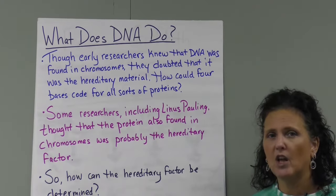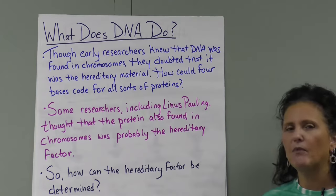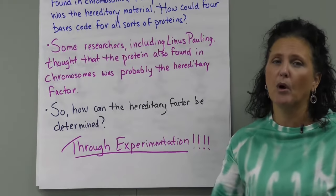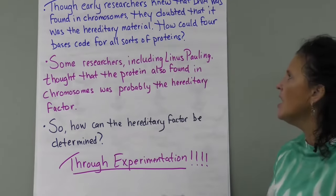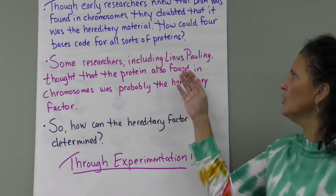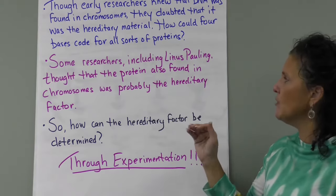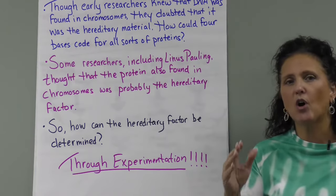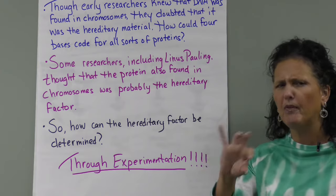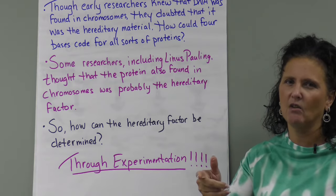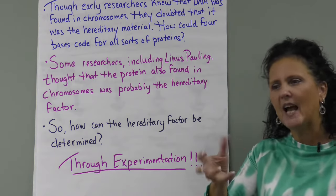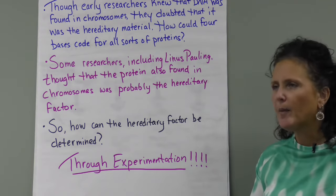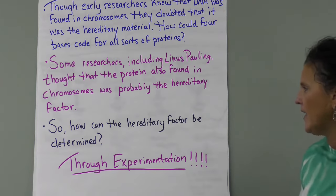They thought that proteins carried your genetic code, because 99% of the time in biology when dealing at the molecular level, it's a protein — proteins usually govern almost everything. So some researchers, including Linus Pauling, thought that the protein also found in chromosomes was probably the hereditary factor. Chromosomes aren't all DNA; it's DNA tightly coiled, but they wrap around proteins called histones, and whether those are looser or tighter around the histone proteins determines which DNA gets read.